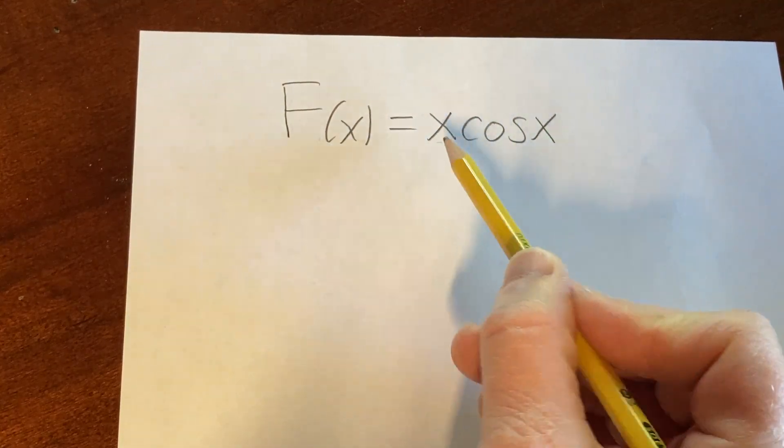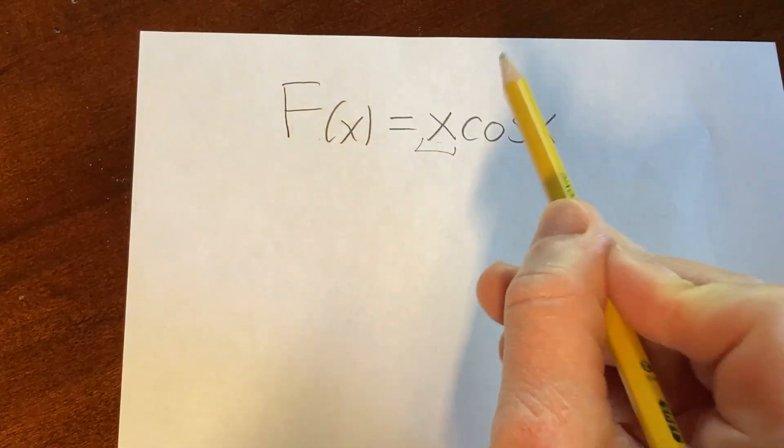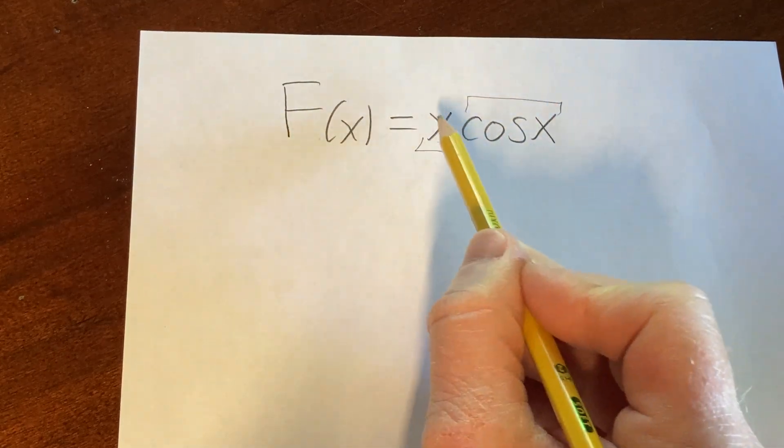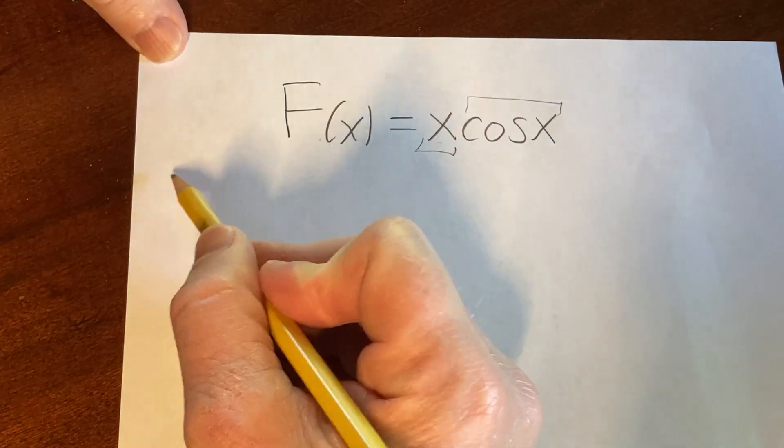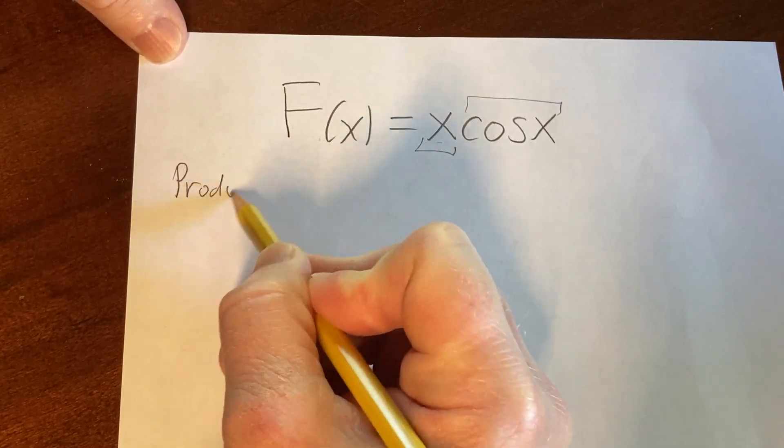Notice we actually have a product here. We have x times the cosine of x, so you have two functions being multiplied. Whenever you have something like this, you can use what's called the product rule from calculus.